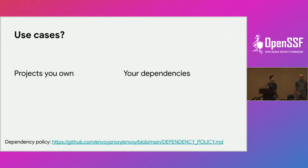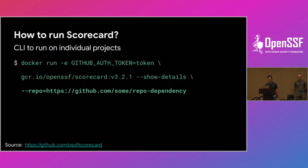What are the primary use cases for Scorecard? You can use it for your own projects as well as for your dependencies — to improve security practices and identify if dependencies are being maintained, and whether there are any vulnerabilities. The easiest way to run Scorecard is using Docker. One critical requirement is a GitHub token, since Scorecard primarily uses the GitHub APIs. You point it to a repository and it runs all the default checks.